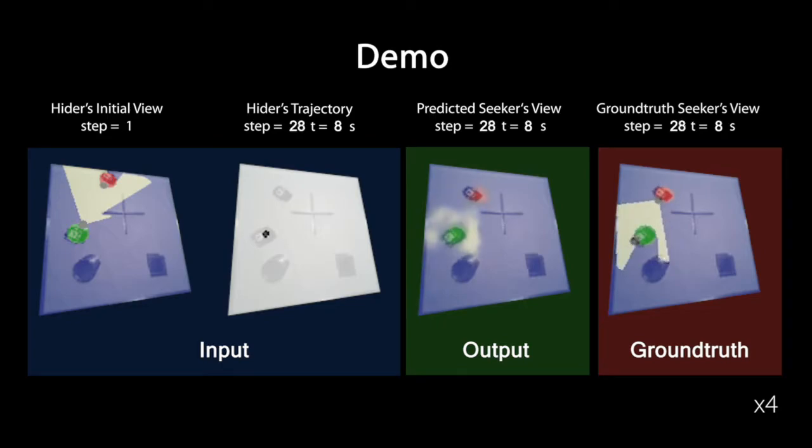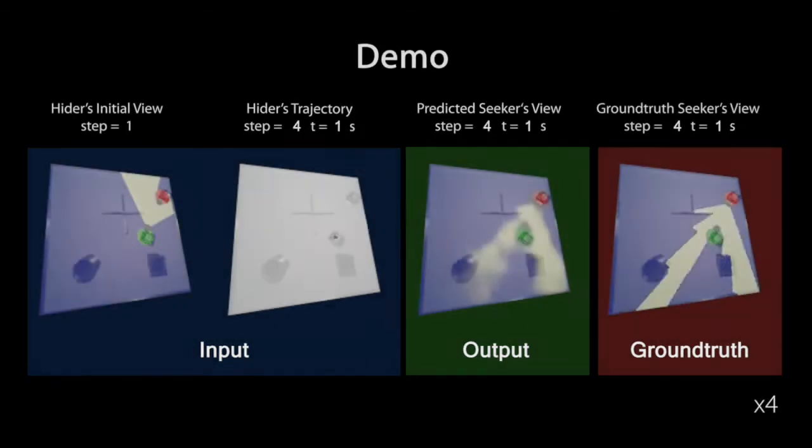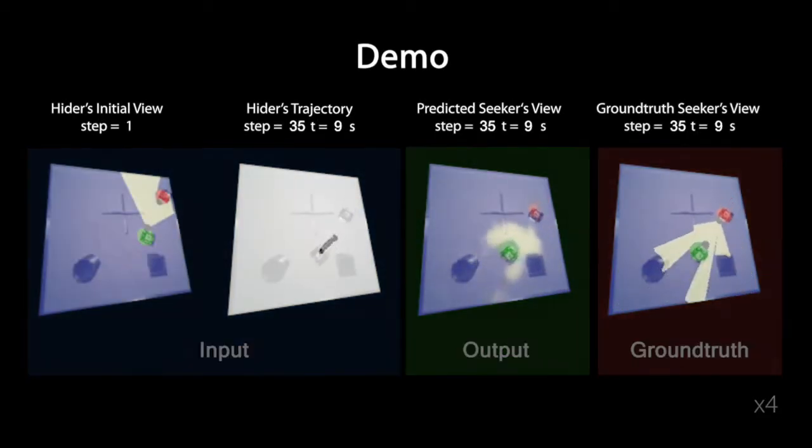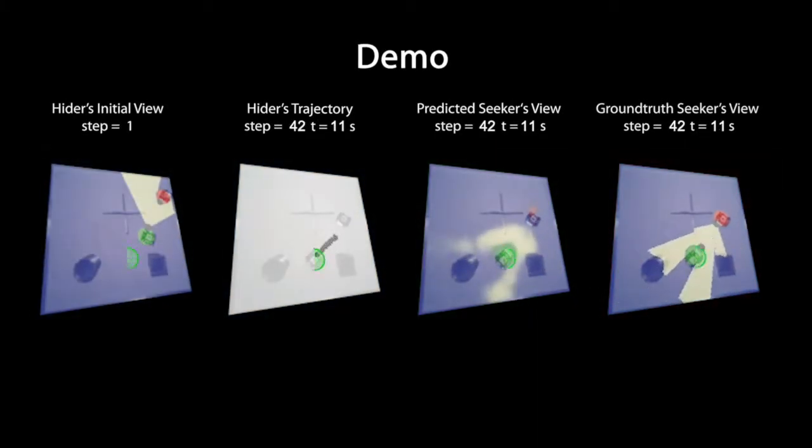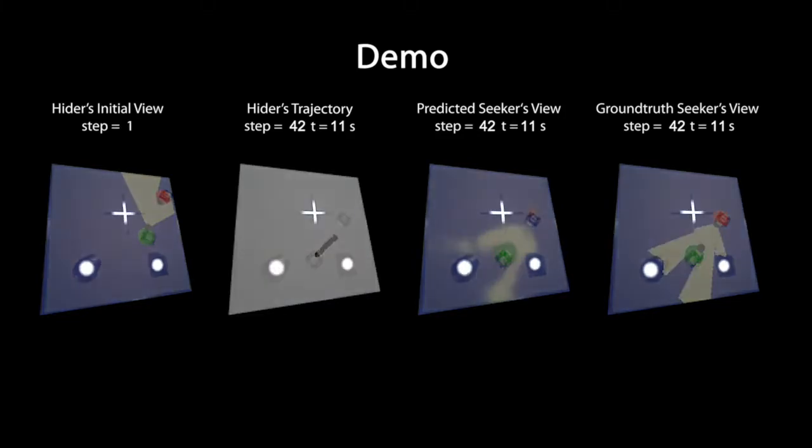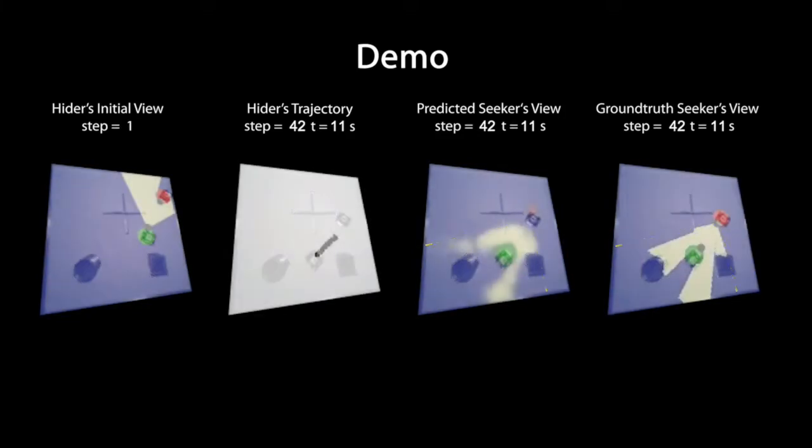Importantly, the hider robot's own actions will affect the seeker's actions. Overall, in order to succeed at the game, the hider needs to learn the effect of its actions on its own body, the room layout, view projection, and the seeker's plan.